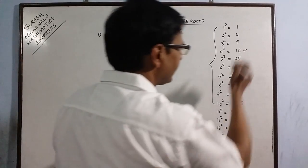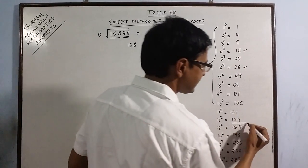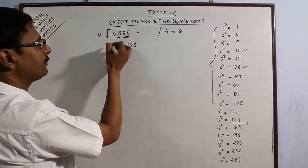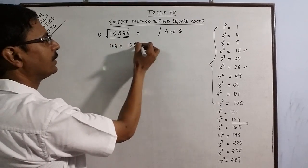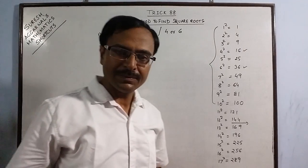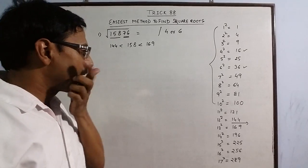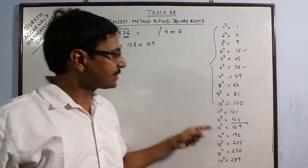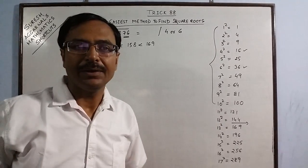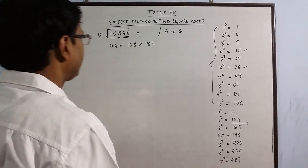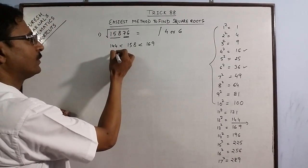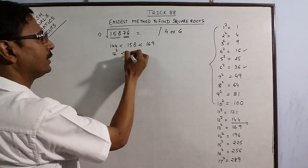Just observe 158 lies between 144 and 169. These are the perfect squares. So just find out between which 2 squares does 158 lie. So you have seen that it lies between 12 square and 13 square.